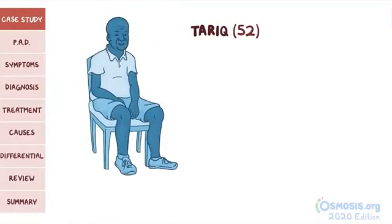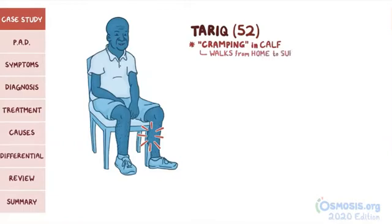Tariq is a 52-year-old individual who presents to the clinic complaining of left leg pain. He describes the pain as cramping and mostly located in his calf. He also mentions that the pain comes every time he walks from his home to the supermarket and is relieved when he rests.